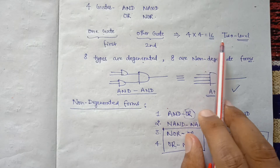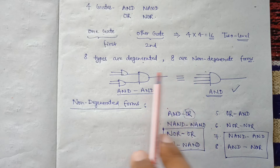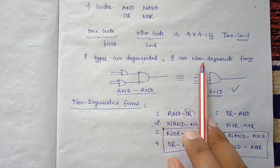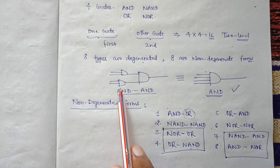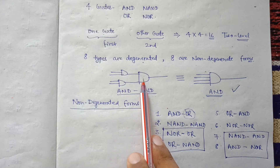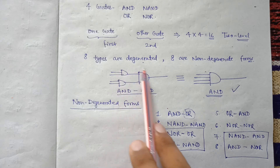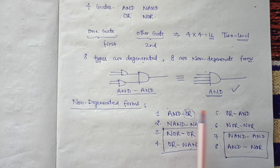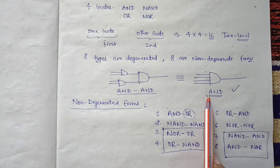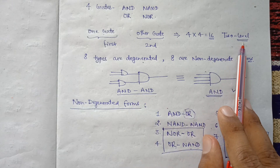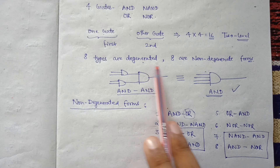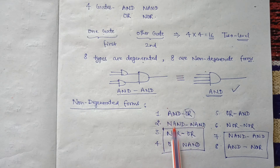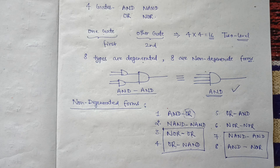In summary, using the four basic gates — AND, OR, and the two universal gates NAND and NOR — there are 16 total combinations of two-level implementation. Out of those, eight are degenerated forms, meaning their effect is the same as a single gate, such as AND-AND reducing to a single AND gate. The remaining eight are non-degenerated forms. Among those eight, two pairs share the same effect, which will be covered in the next video.